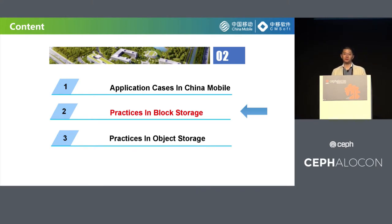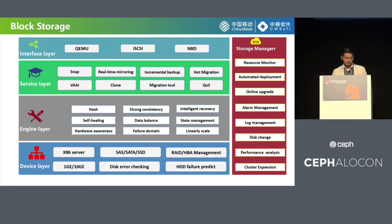This is the architecture overview of our block storage product. It's based on Ceph, supporting KVM, VMware, zones, bare metal, and containers. It's widely used in private cloud, R&D cloud, public cloud, and video storage. The total capacity in production environment has been over 500 PB. Apart from standard Ceph features, we have some self-developed characteristics like iSCSI, migration between Ceph and Sheepdog, disk error checking, and disk failure prediction. We also have a storage management platform to deploy clusters and monitor resources.